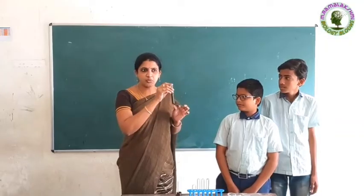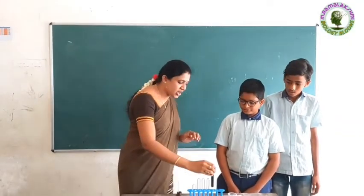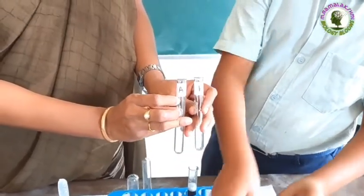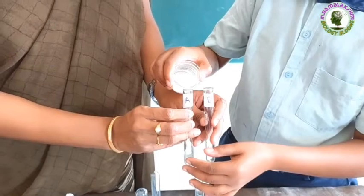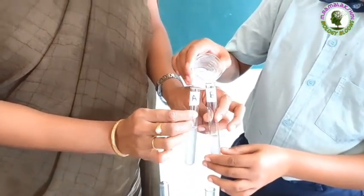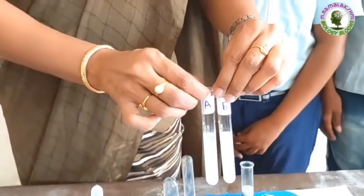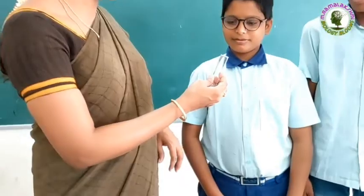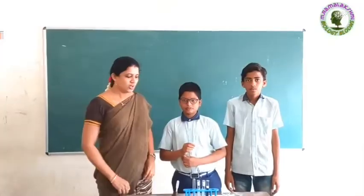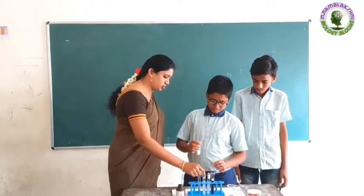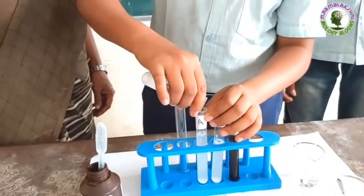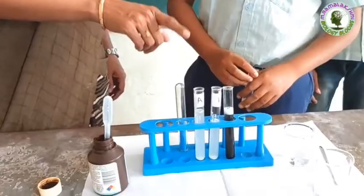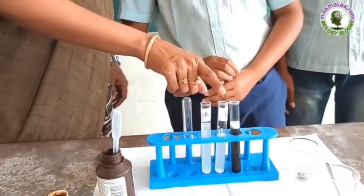Is it true? Yes, it is a starch solution. So, Shyam, now pick the same quantities of starch solution into both test tubes. One test tube is labeled A and another is labeled B. We took the same quantity of starch solution into both test tubes. Now, Shyam, collect the fresh saliva and add your saliva into test tube A. Children, observe that test tube A contains saliva, but we have not added anything into test tube B.